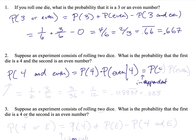So this equals the probability the first die is a four times the probability the second die is an even number, because whatever happens on the first die has no effect on the second. The probability the first die is a four is one out of six; the probability the second is even is three out of six. That gives us three out of 36, which reduces to one-twelfth, or 0.083 repeating, which you could round to 0.083.